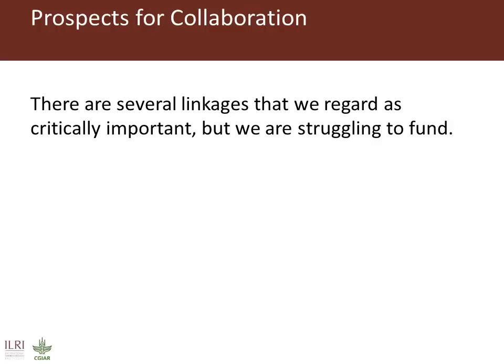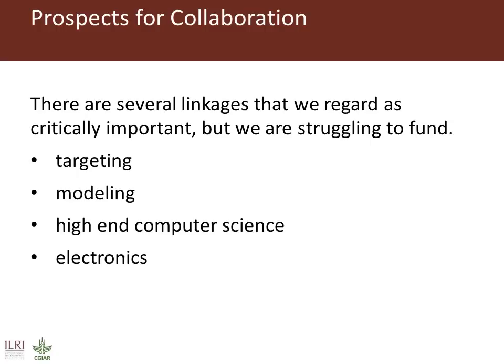So what are our prospects for collaboration? There are several linkages we regard as critically important that we are struggling to fund. I could list these as targeting, modelling, high-end computer science, and electronics, among others — areas where we would really like to do research. We'd like funding to plug gaps and build a more coherent set of programmes running from high-end, high-risk to downstream, low-risk activities. Donors are not especially interested in funding these, so although we've flagged them as very important, they are not prominent in our portfolio at the moment. We would certainly like to raise the profile of these areas.